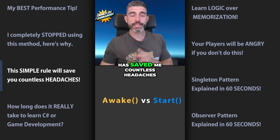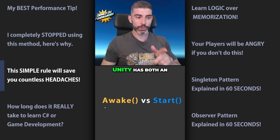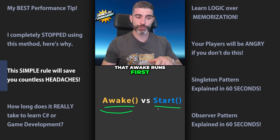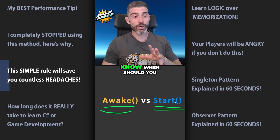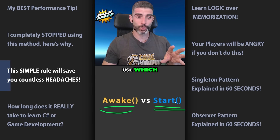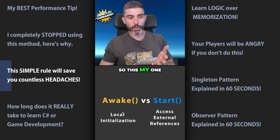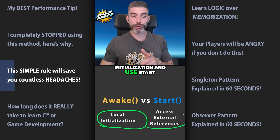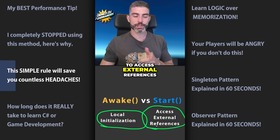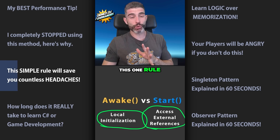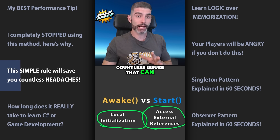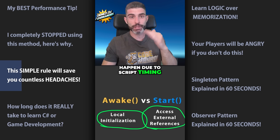This one simple rule has saved me countless headaches. Unity has both Awake and Start — you probably know that Awake runs first and then Start runs — but you might not know when you should use which. So this is my one simple rule: use Awake for local initialization and use Start to access external references. If you just follow this one rule, you'll save yourself countless issues that can happen due to script timing.